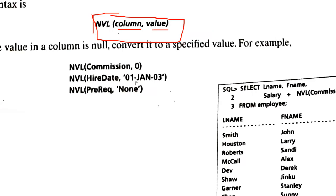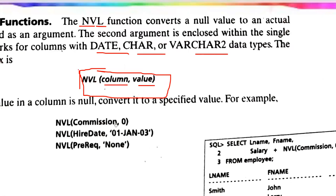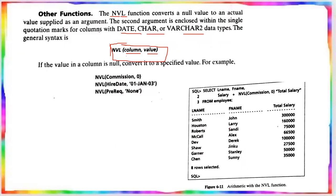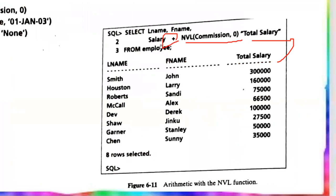For a hire date column, you substitute a value — and if it's a date or character type, it will be enclosed within quotes. In this example, we are selecting columns from the employee table. The salary column is in the NVL function, and the NVL function returns that value added to salary to give total salary.